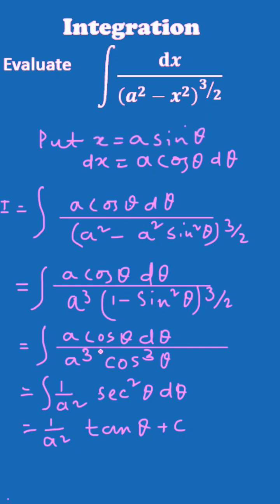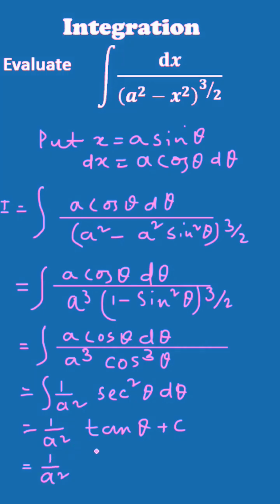Now, from the relation, you will get the value of tan θ, and it will be x divided by √(a² minus x²).